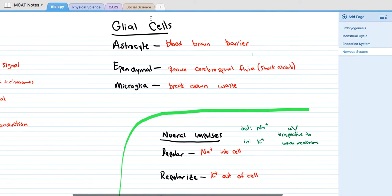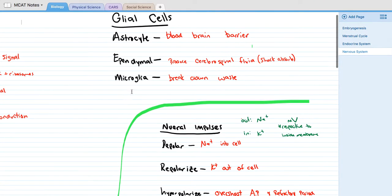Other cells in the neural system are glial cells. One type is astrocyte, which is basically the blood-brain barrier. Another type is ependymal, which produces the cerebrospinal fluid, which is the shock absorber in the spine. And then microglia will break down waste, kind of similar to a macrophage. Microglia also makes sure there's no pathogens in the neural system, like in the spine.